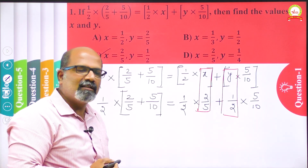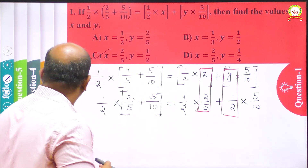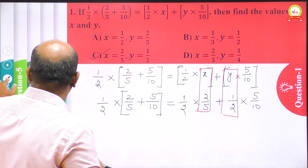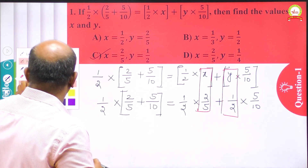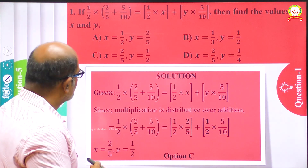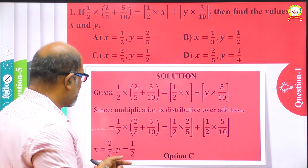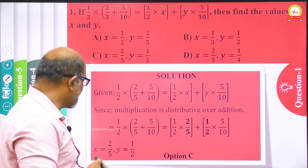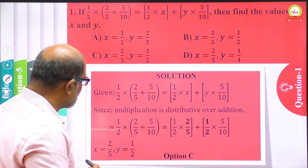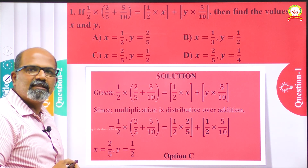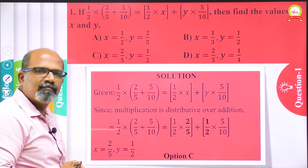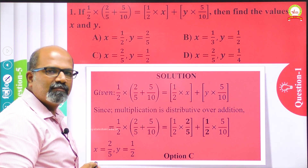Very easy one. Let us check the answer that is available. Option C is correct — x is equal to 2/5 and y is equal to 1/2, as you can see on the screen.